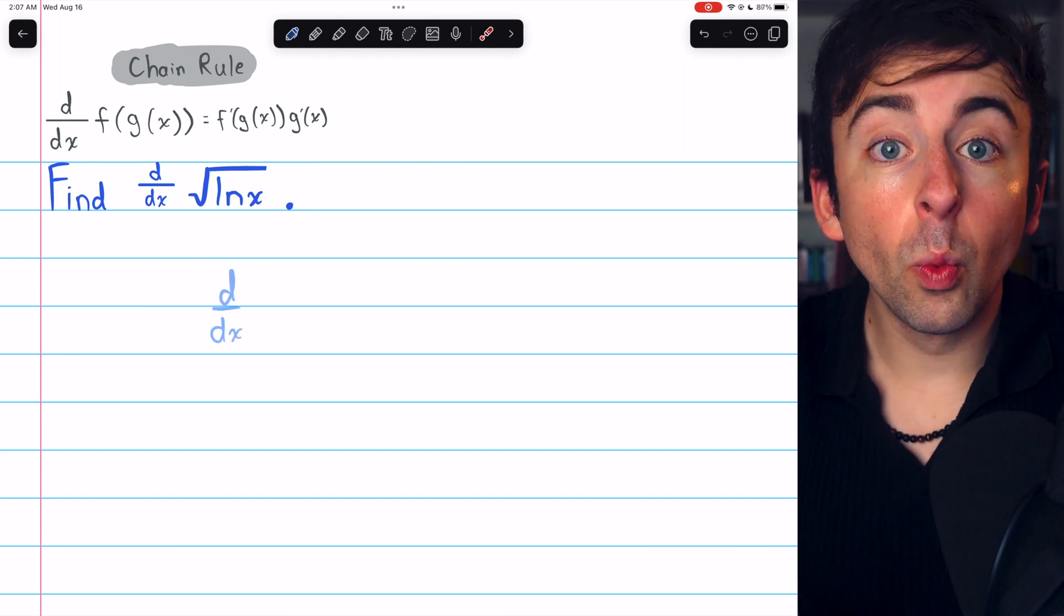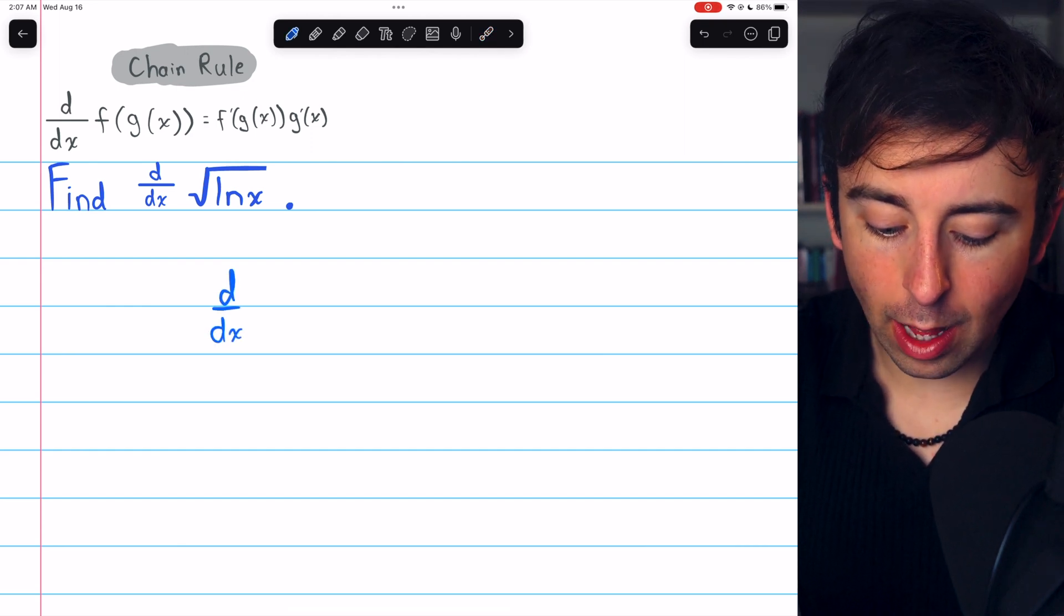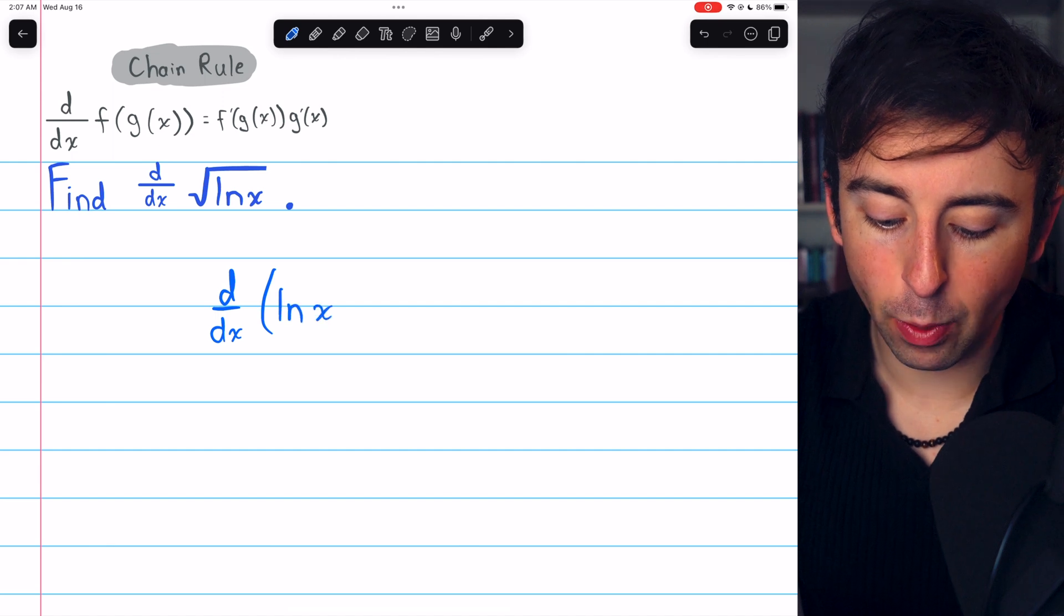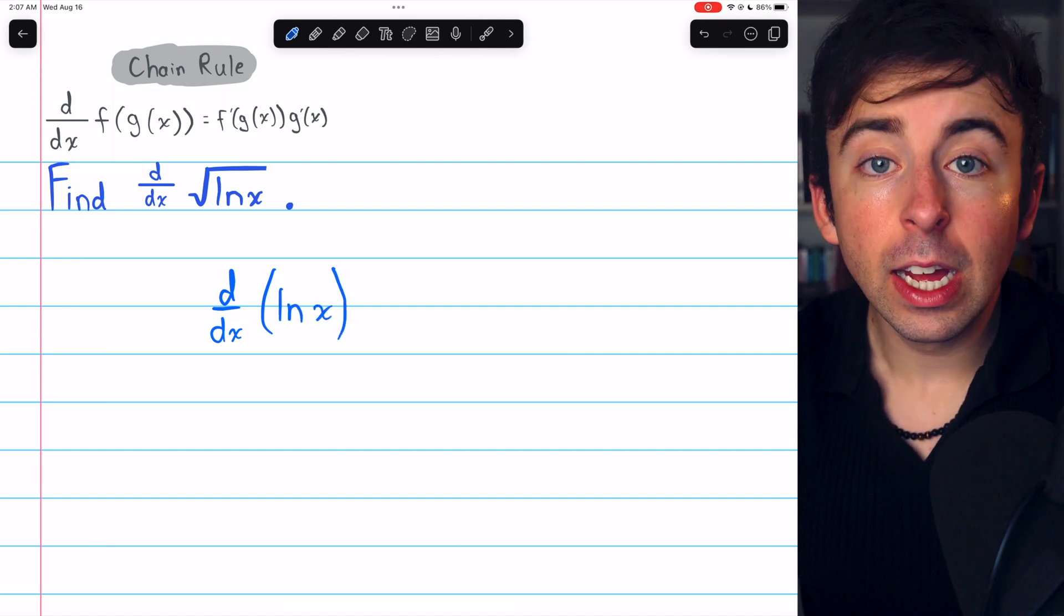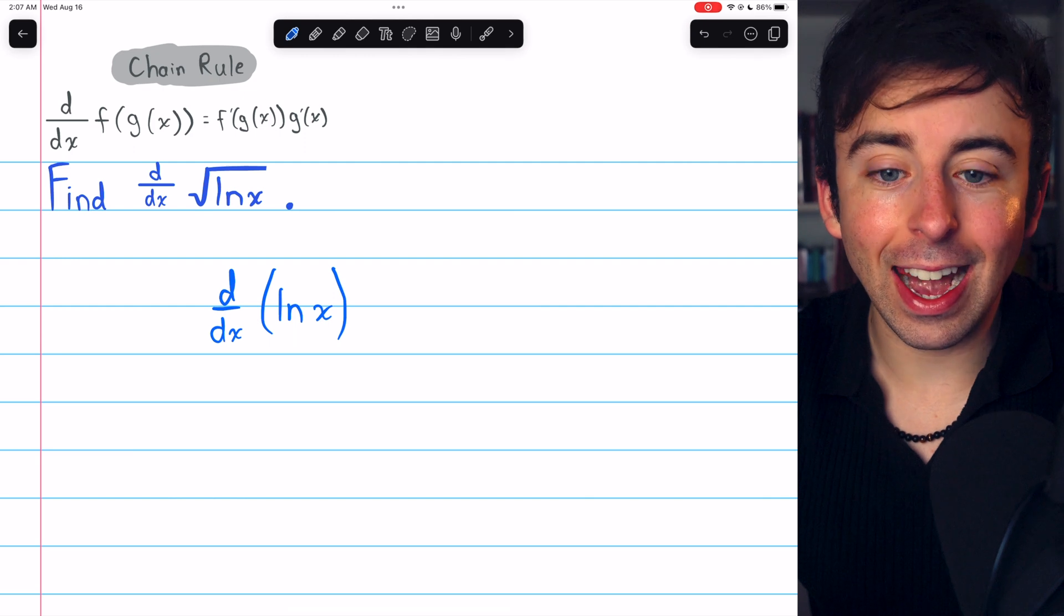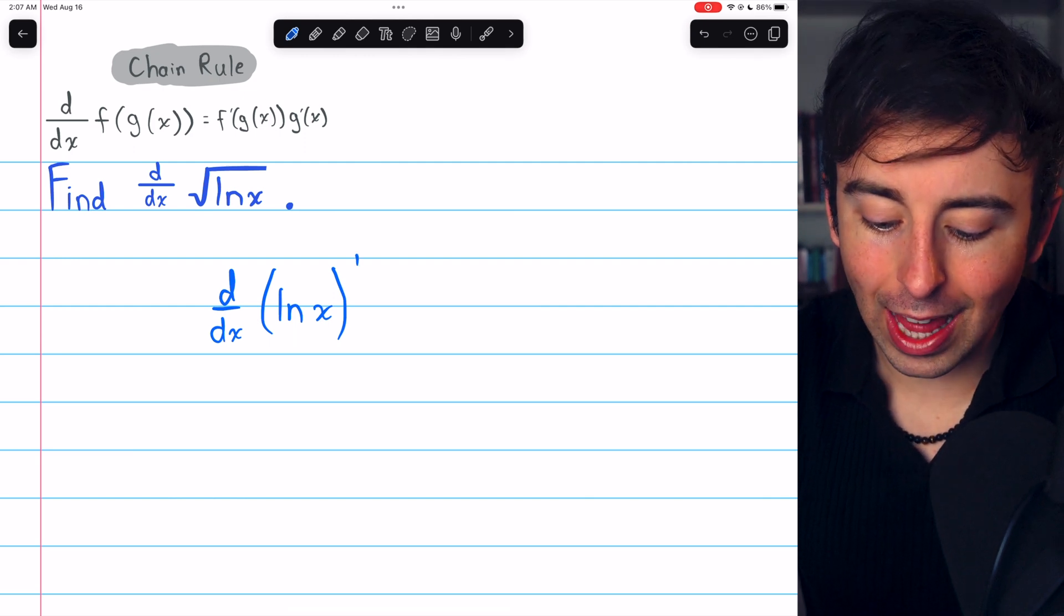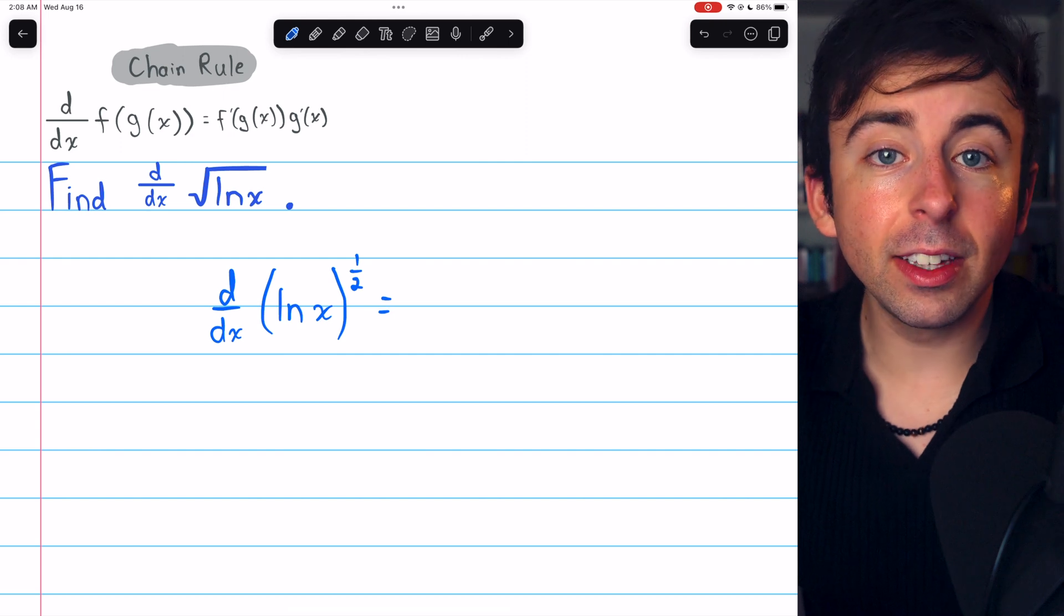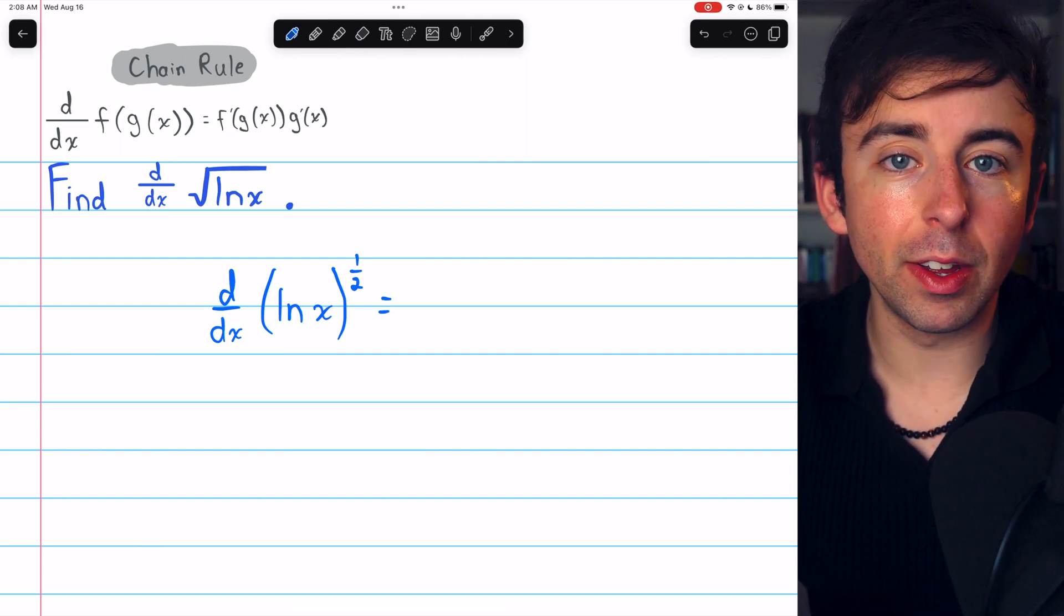Let's apply the chain rule. When taking derivatives, it's often helpful to rewrite radicals as powers, which is what I'm going to do here. The square root of ln x is the same as ln x to the power of 1 half. And this is what we are taking the derivative of.